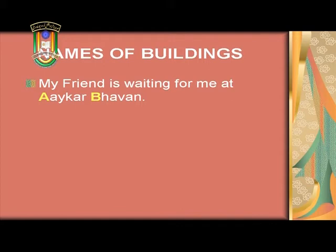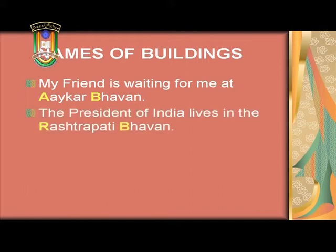Apart from this, a capital letter is also used to indicate names of buildings. If I were to say my friend is waiting for me at Ayikar Bhavan, I would capitalize A and B. Or you could say: the President of India lives in the Rashtrapati Bhavan. In these two examples, Ayikar Bhavan and Rashtrapati Bhavan are names of buildings and therefore need to be capitalized. It could be any other building — for example, talking about Gagan Vihar, you would capitalize G of Gagan and V of Vihar. Or if you want to say my friend stays near Gharonda Apartments, you would capitalize the G of Gharonda and the A of Apartments.